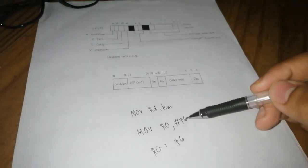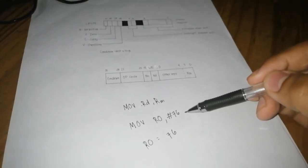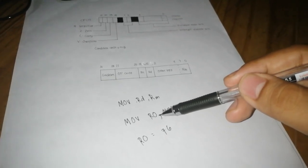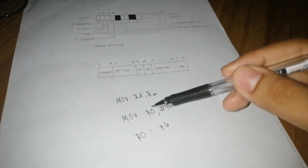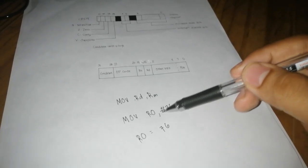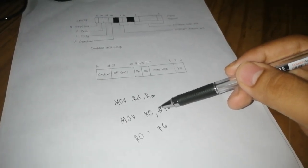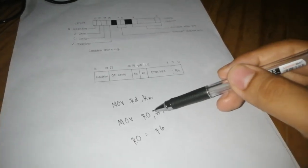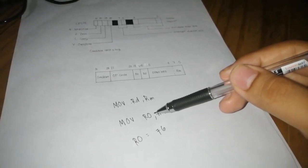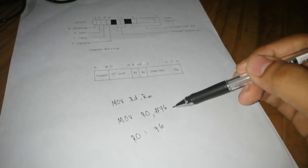We will move this number to register R0, simply just move R0 comma sharp 76, that R0 will have the value of 76.